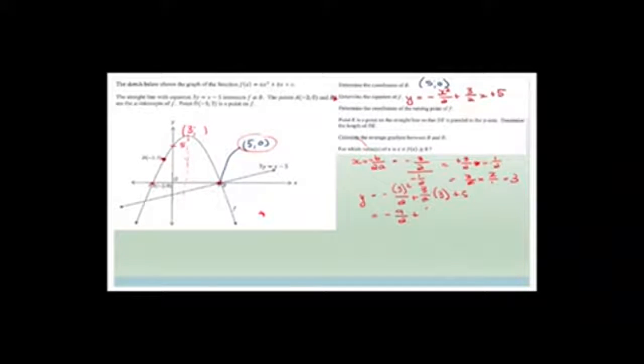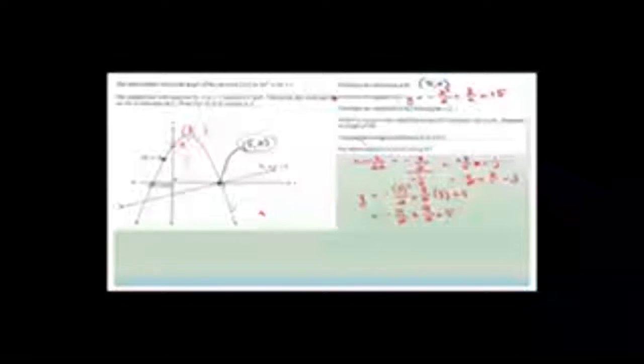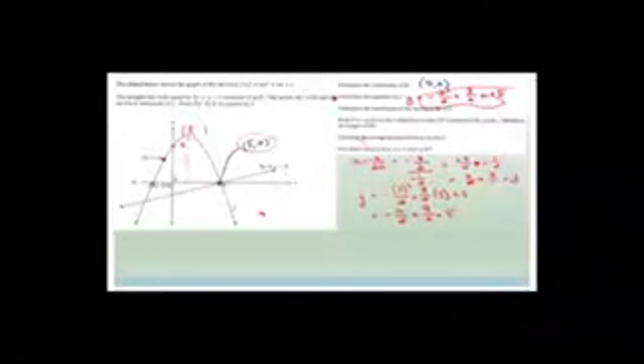So now that we've got the x-value is 3, we need to substitute 3 into this equation to get the y-value. We get y equal to minus 3 squared over 2 plus 3 over 2 multiplied by 3 plus 5, which gives minus 9 over 2 plus 9 over 2 plus 5. That can't be right — I think we've made a mistake. There might be a mistake in this equation. Let's start this equation over again.